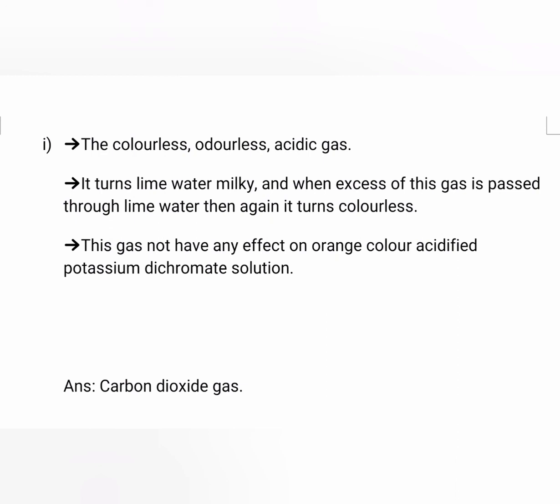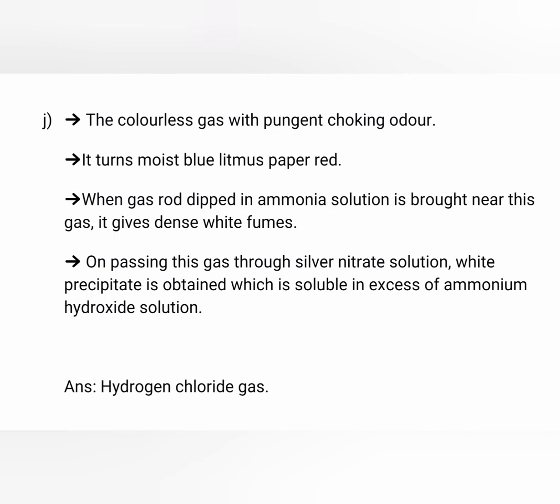The colorless, odorless, acidic gas which turns lime water milky, but when excess is passed through lime water it again turns colorless; this gas has no effect on acidified potassium dichromate. Answer: carbon dioxide gas. The colorless gas with a pungent choking odor which turns moist litmus paper red and when brought near ammonia gives dense white fumes. Answer: HCl.